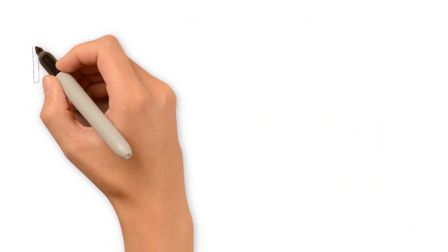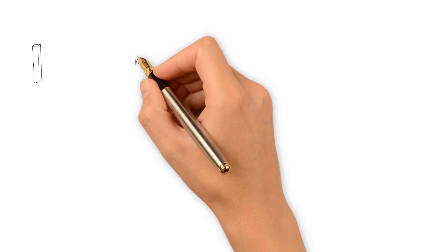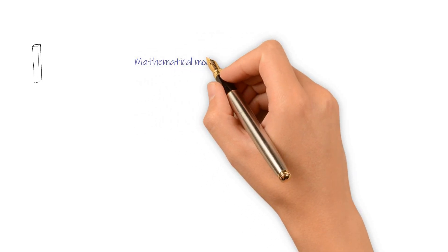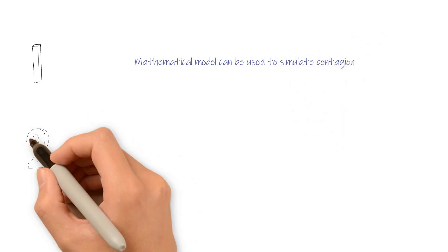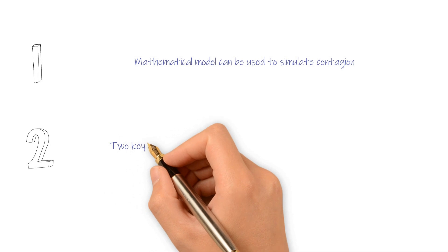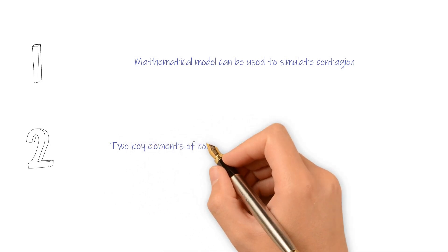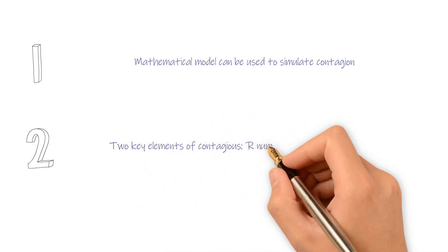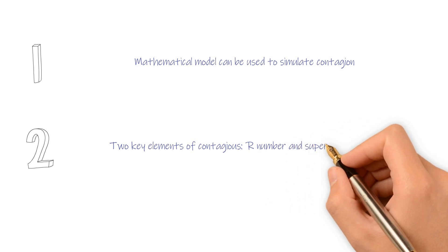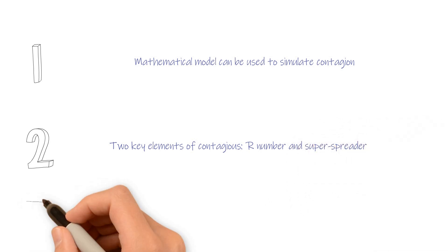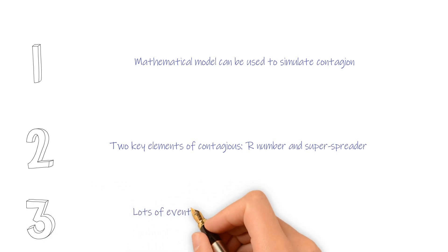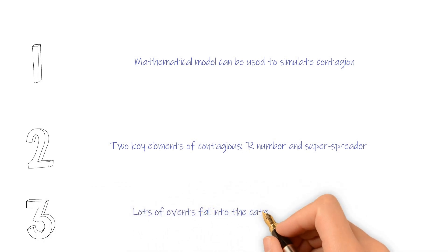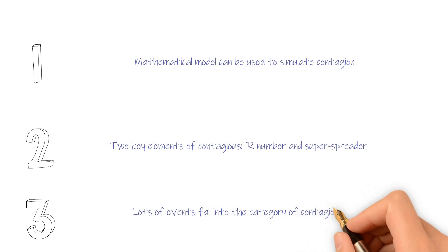Three takeaways: First, mathematical models can be used to simulate contagions. Second, the key elements of contagions are the R number and super spreaders. Third, lots of events fall into the category of contagions, so we can apply the same models to them.